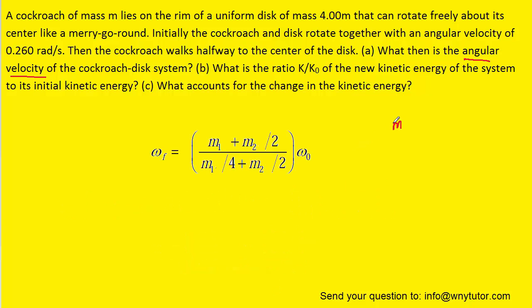We recall that the mass of the cockroach, or m1, was given as just m in the question. And then the mass of the disk, or m2, was given as 4m. So, we can make those substitutions for m1 and m2.